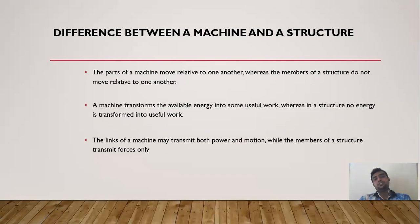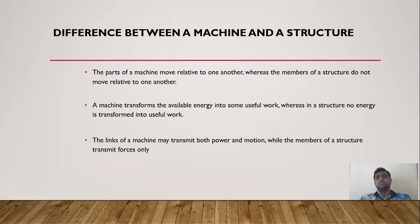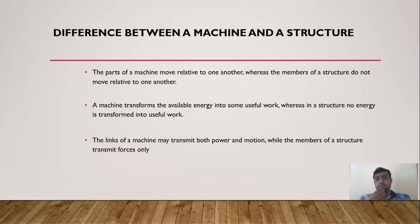Now the difference between machines and structures: a machine transmits available energy into useful work, but a structure does not transmit useful work. In a structure, the number of links has zero degrees of freedom. The links of a machine may transmit both power and motion, while the member of a structure transmits force only. That is the basic difference between machines and structures.